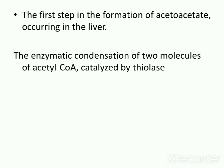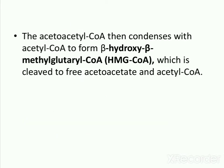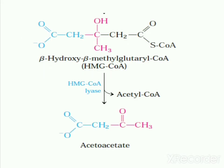In the second reaction, acetoacetyl-CoA is condensed with another acetyl-CoA to form beta-hydroxy-beta-methylglutaryl-CoA, known as HMG-CoA, which is then cleaved to free acetoacetate and acetyl-CoA. In the third step, acetoacetate is reversibly reduced by d-beta-hydroxybutyrate dehydrogenase, a mitochondrial enzyme, to produce d-beta-hydroxybutyrate.